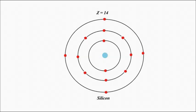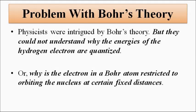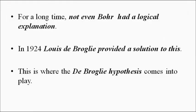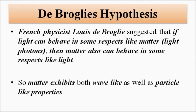All these questions were not answered by Bohr's theory. He just explained the whole thing but could not give the reason — basically why electrons were restricted to fixed orbits of fixed radius from the nucleus. A very good explanation to this came in the form of the de Broglie hypothesis, given by Louis de Broglie.